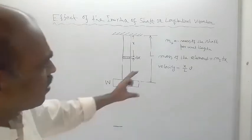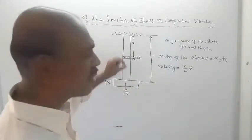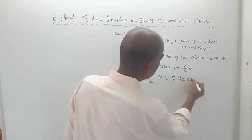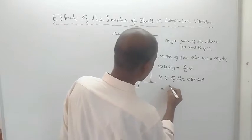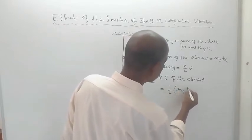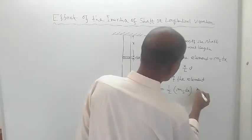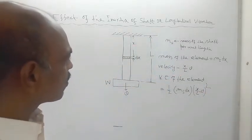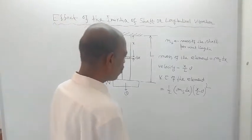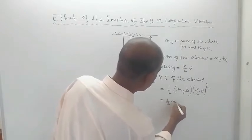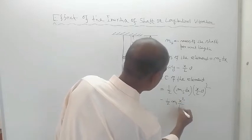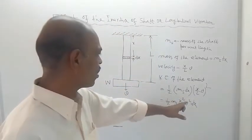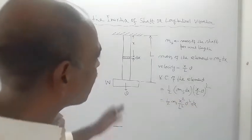If this is the velocity, then the kinetic energy of the element is equal to half times the mass times the square of the velocity: ½ · ms·dx · (x/L · v)². This simplifies to ½ · ms · (x²/L²) · v² · dx. This is the kinetic energy of the element.